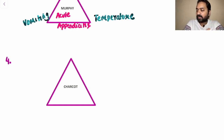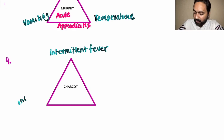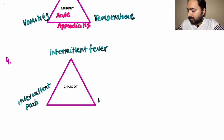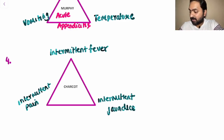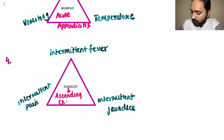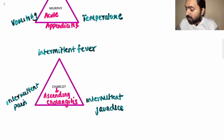The next triad, which is an examiner's favorite and has been asked multiple times, is Charcot's Triad. Its components are intermittent fever, intermittent pain, and intermittent jaundice. This is seen in ascending cholangitis.